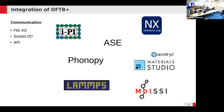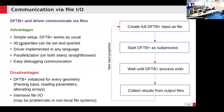Now, let's assume we want to communicate with DFTB+. There are three different communication channels: FILE-IO, SOCKET-IO, and the API. I will say a few words about each of them.